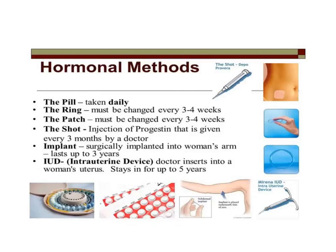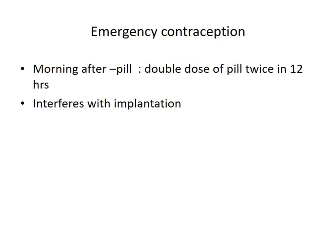There are different methods of hormonal preparation: pills, rings, patches, implants, and IUDs. Emergency contraception — the morning-after pill — involves taking a double dose of the pill and then another two tablets 12 hours later, which prevents implantation. This method is used when you think there has been physical contact and you have not used any other method of contraception, or you have forgotten to take the pills.